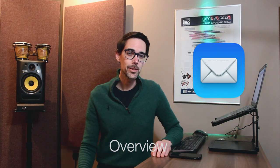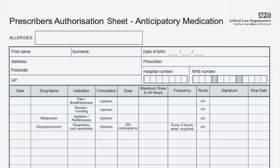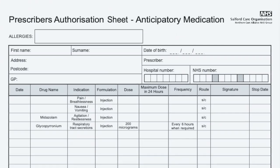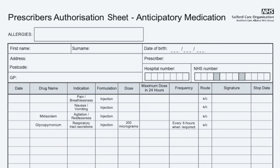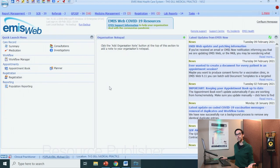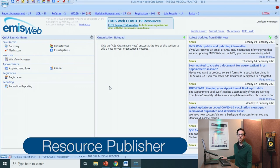Here's the scenario: I get an email from the Macmillan nurses with a new prescriber's authorization sheet for anticipatory medication. My first thought is that's a lot of tables I'm going to need to fill in. So let's try to automate that process by using document templates. Click on the EMIS ball in the top left-hand corner.